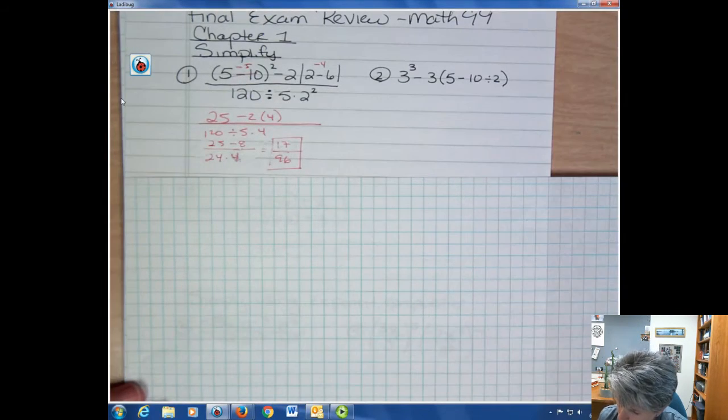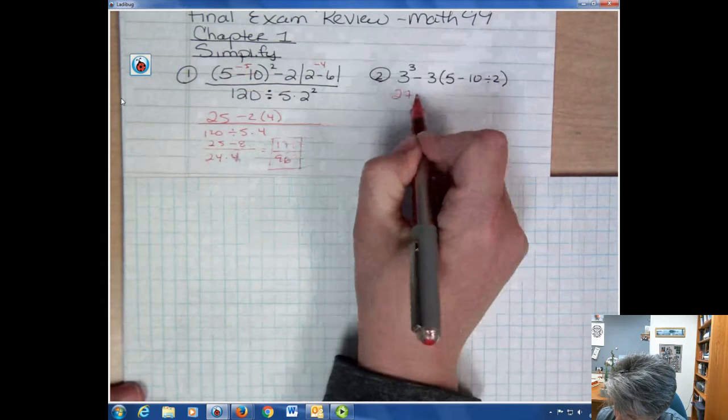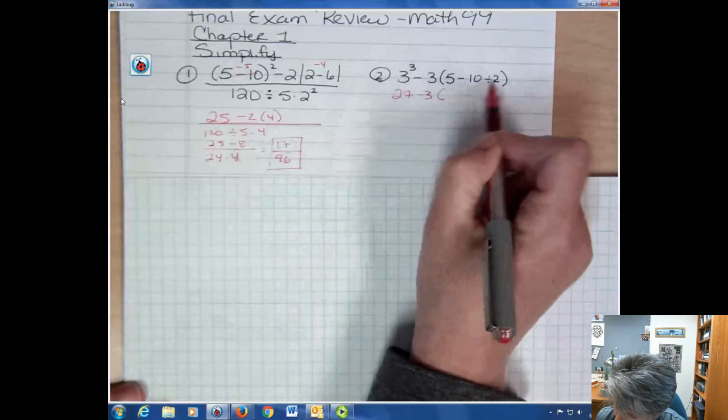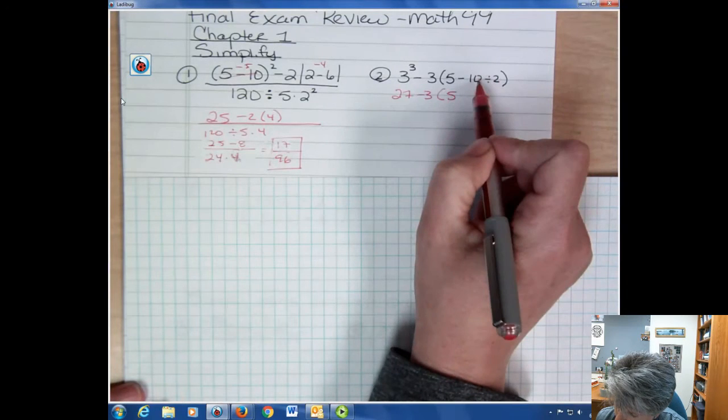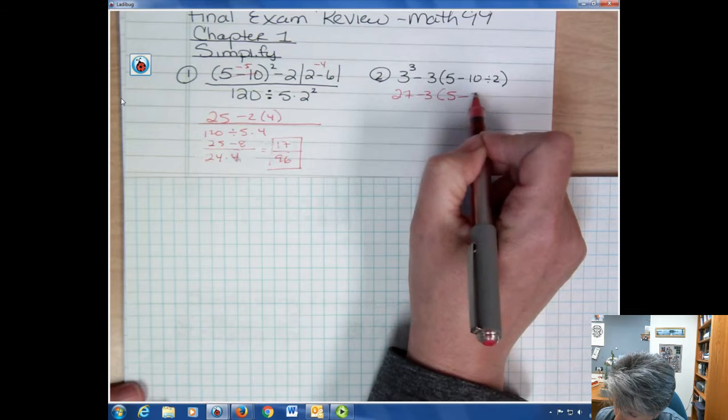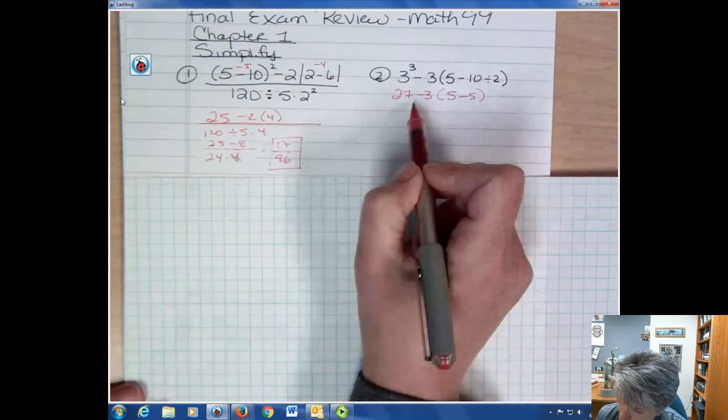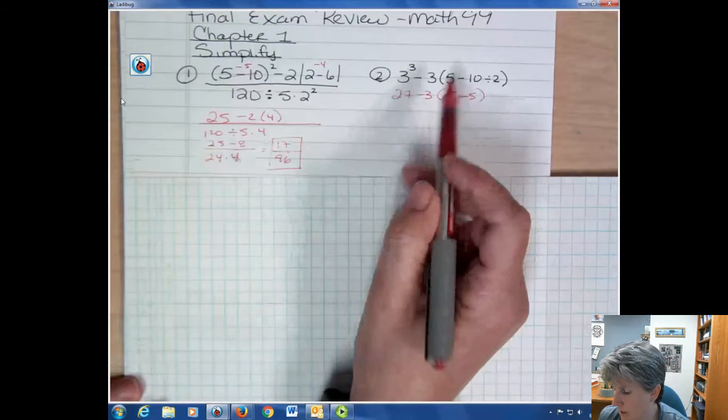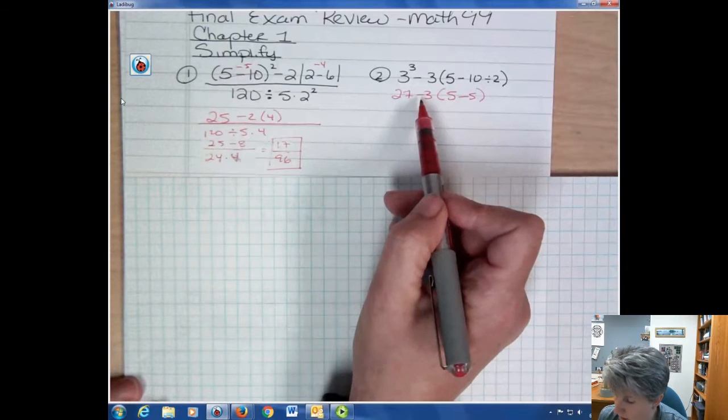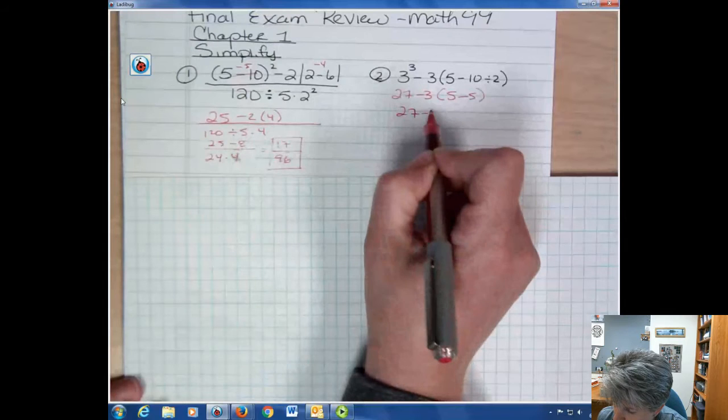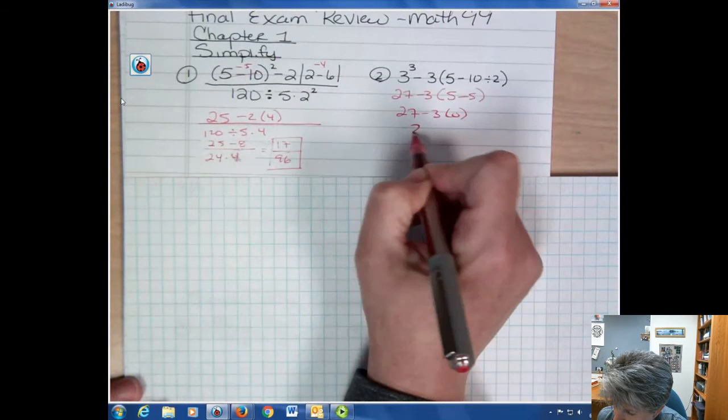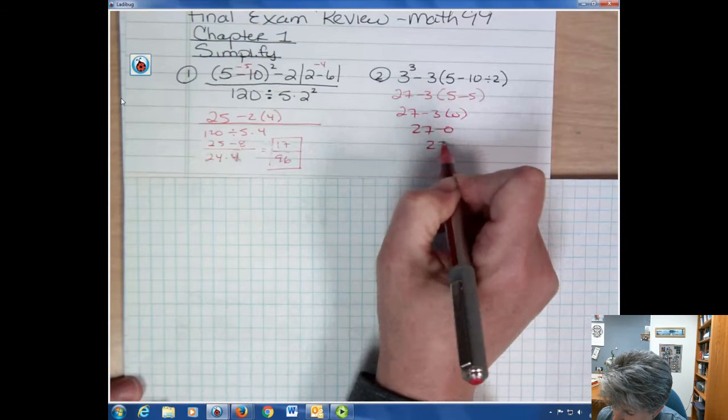On the second one, 3 to the third power is 27. Inside the parentheses we have subtraction and division. We're going to do that subtraction first. 10 divided by 2 is 5. And here people sometimes want to get 27 minus 3 first, but we have to finish the parentheses and multiply by 3 before we do that. 5 minus 5 is 0. 27 minus 0 is 27.